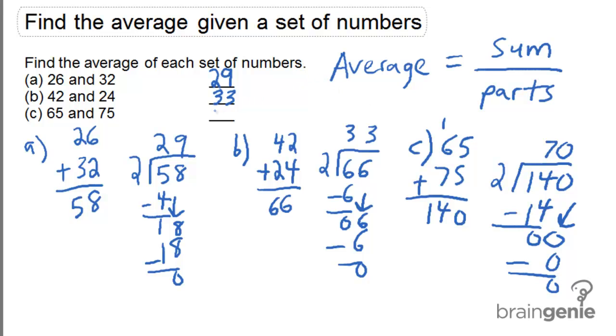So the key takeaway is that average is equal to the sum of the set of numbers divided by the number of parts.